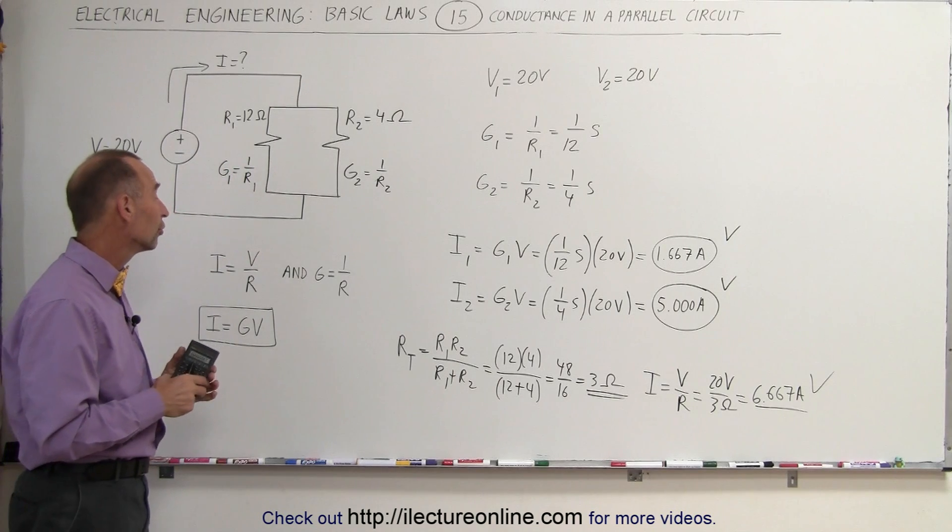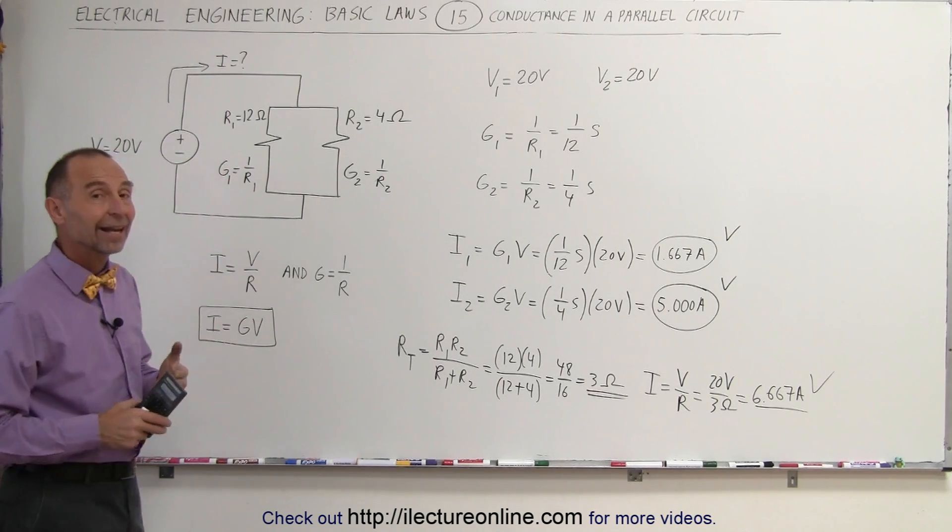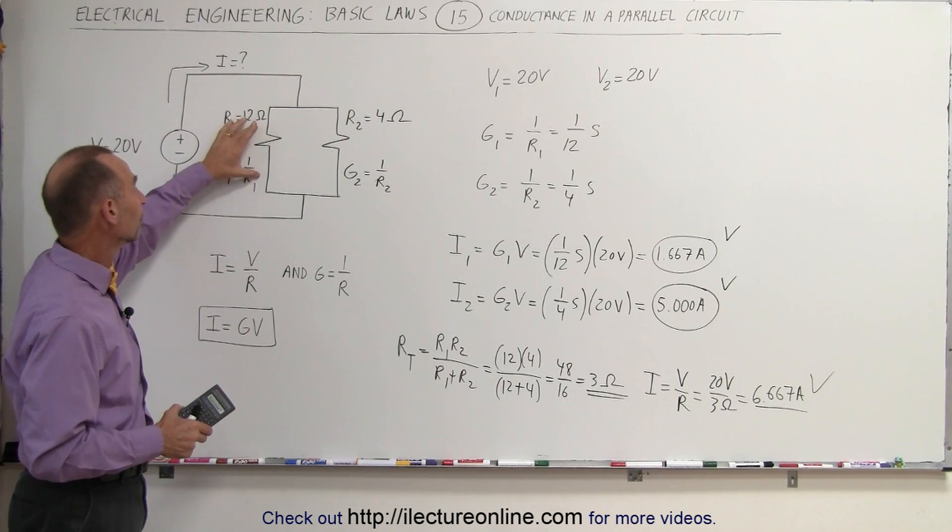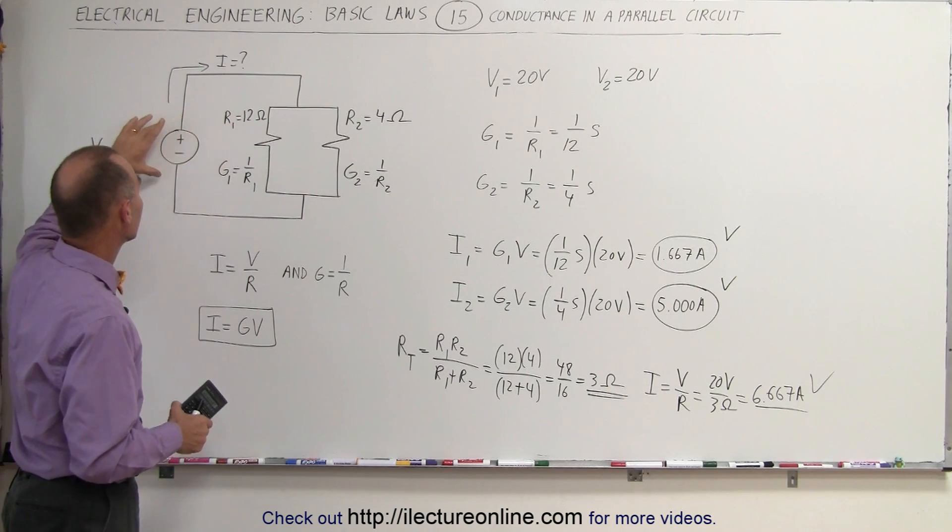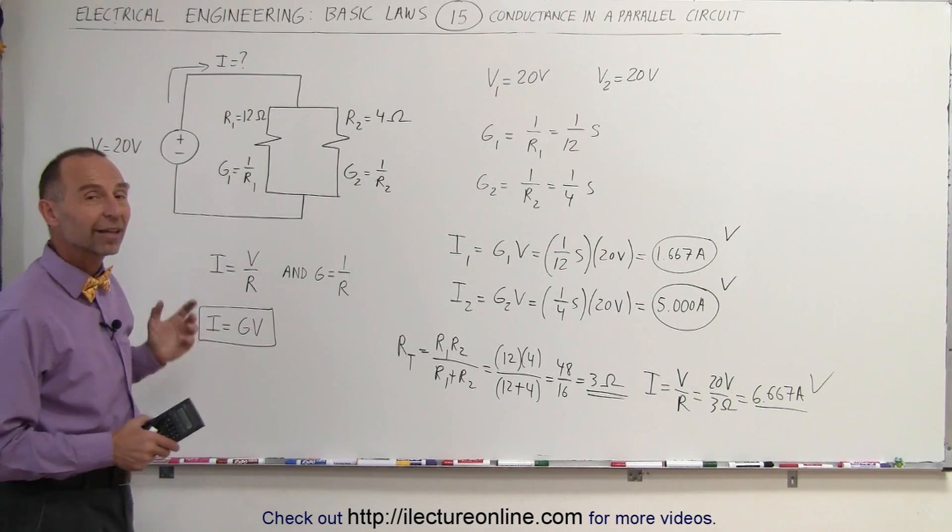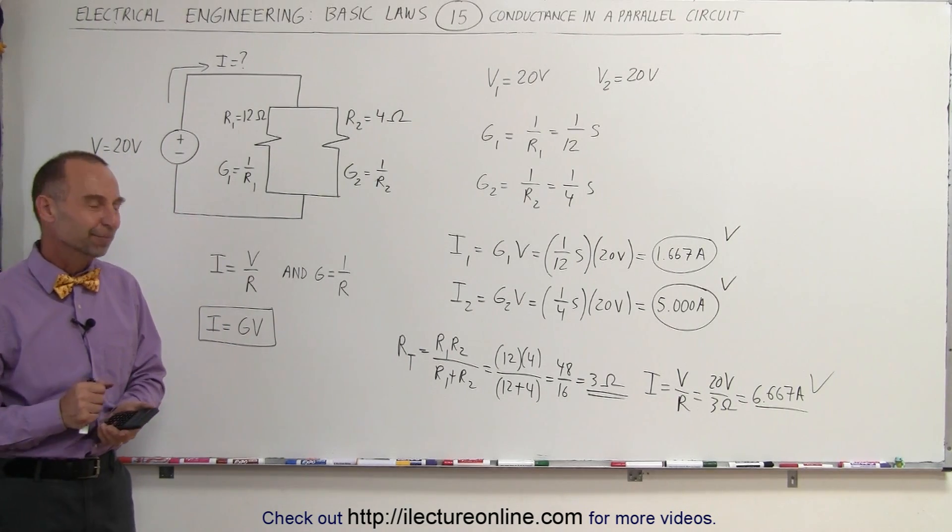Again, you can see that if you use conductance instead of resistance in parallel circuits, it actually makes it easier to find the current in each of the branches. We simply multiply the voltage of each branch, which is equal to the voltage across the branch, times the conductance in each branch. That gives you the current. So it's a quick way to find the current in a different method. That's how it's done.